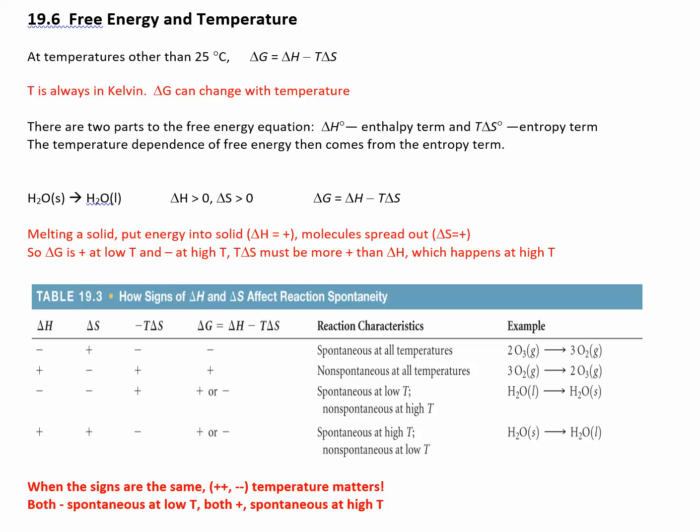Now we can look at the relationship between delta G, which is free energy, and temperature. Some reactions are spontaneous at all temperatures, some are only spontaneous at low temperatures, sometimes at high, and some are never going to be spontaneous no matter what you do. So you have to look at this equation: delta G equals delta H minus T delta S.